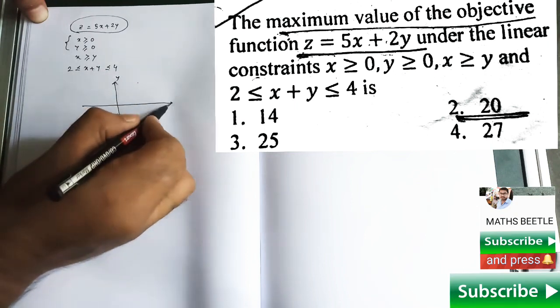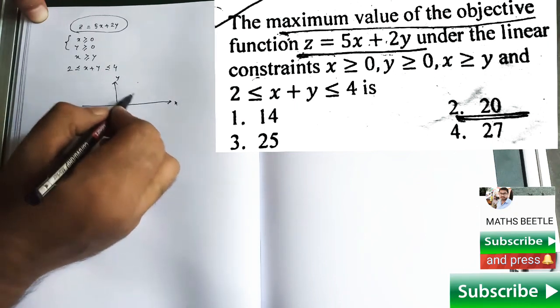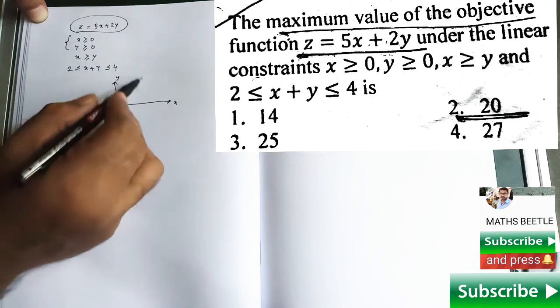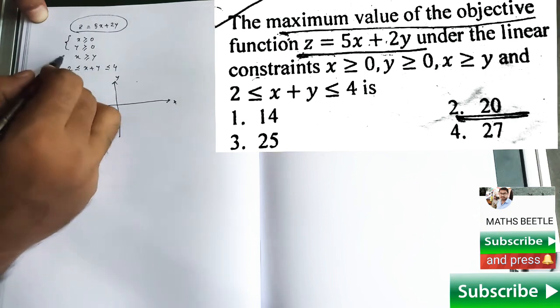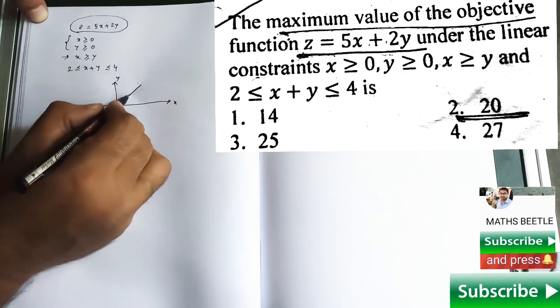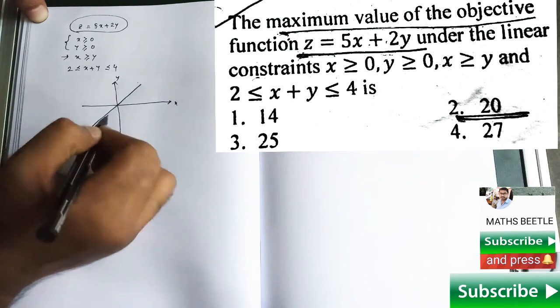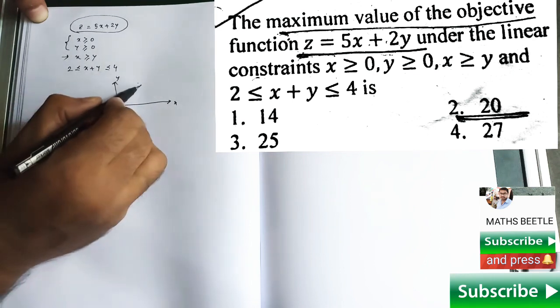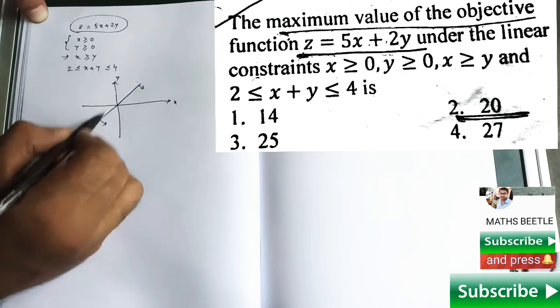If this is y and this is x, so first two implies first coordinate. Now come to the third constraint, and if you draw the inequality, then you will find something like that.